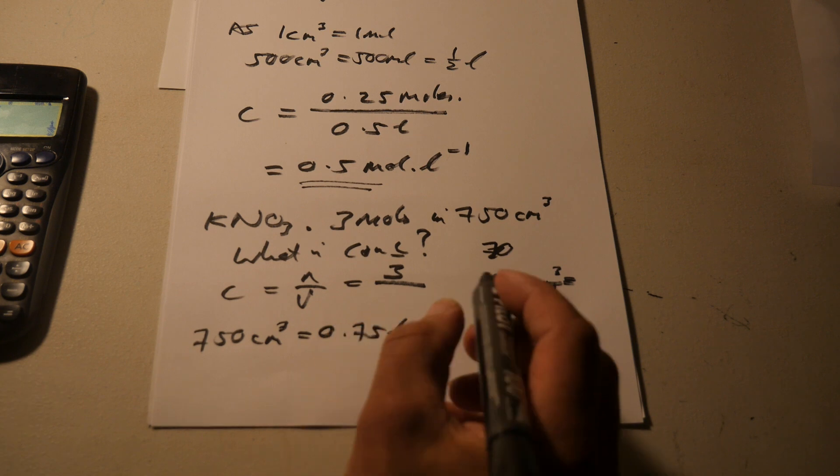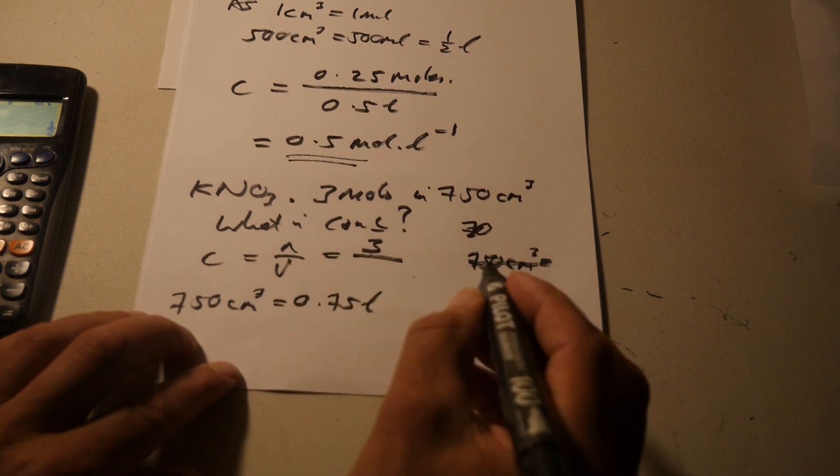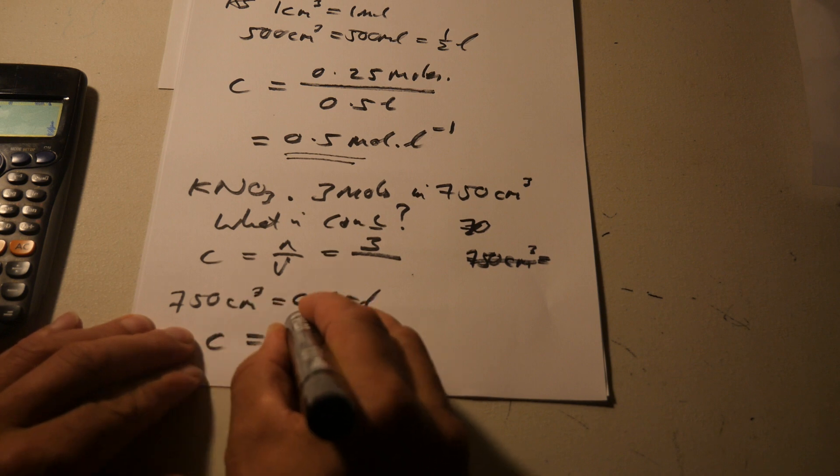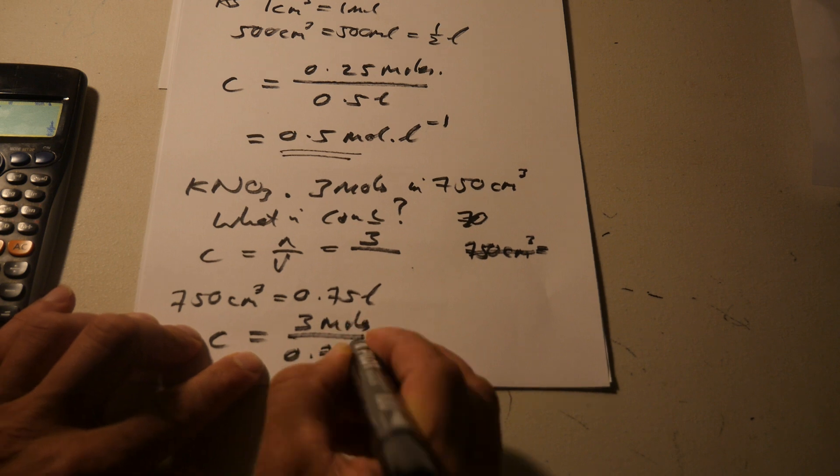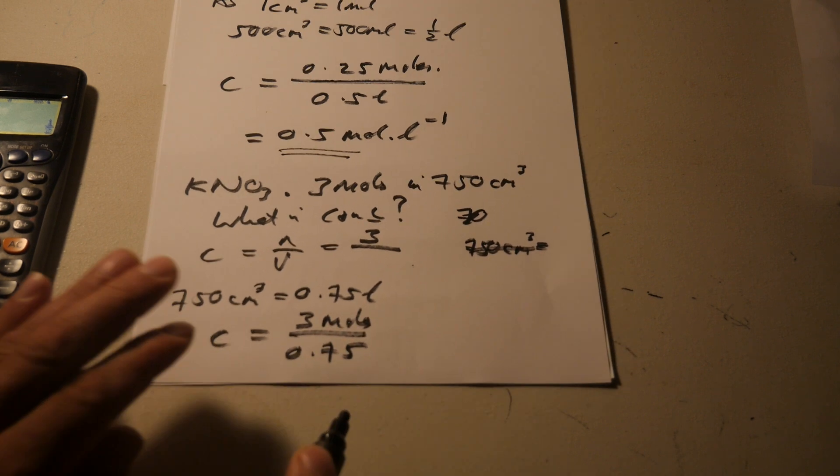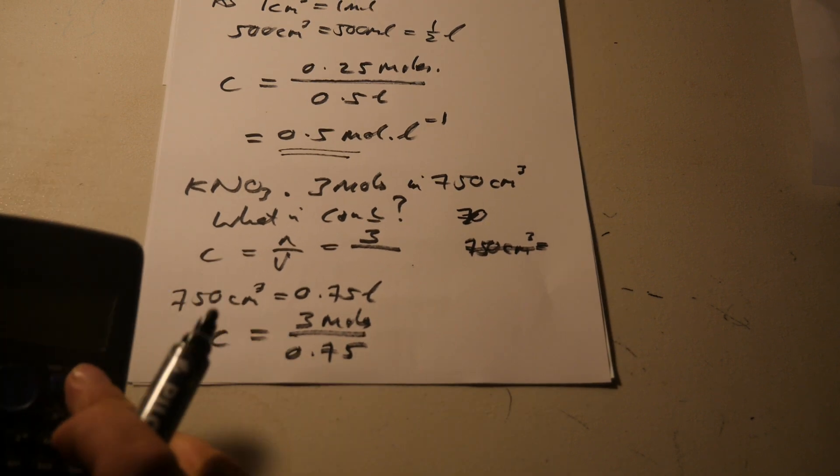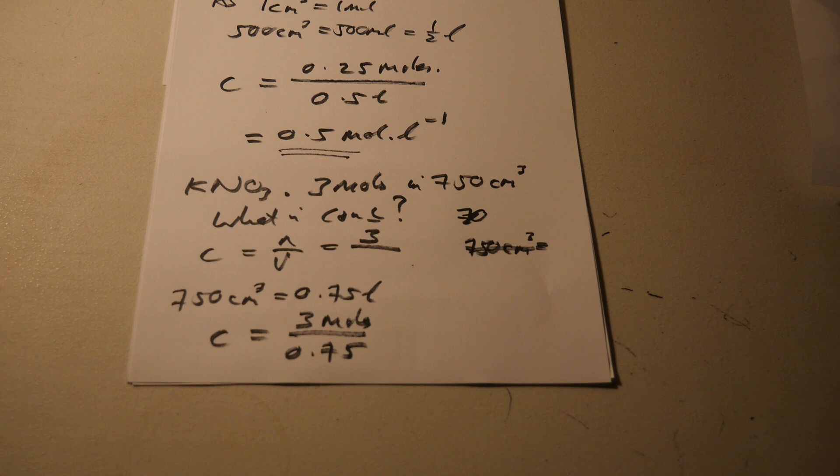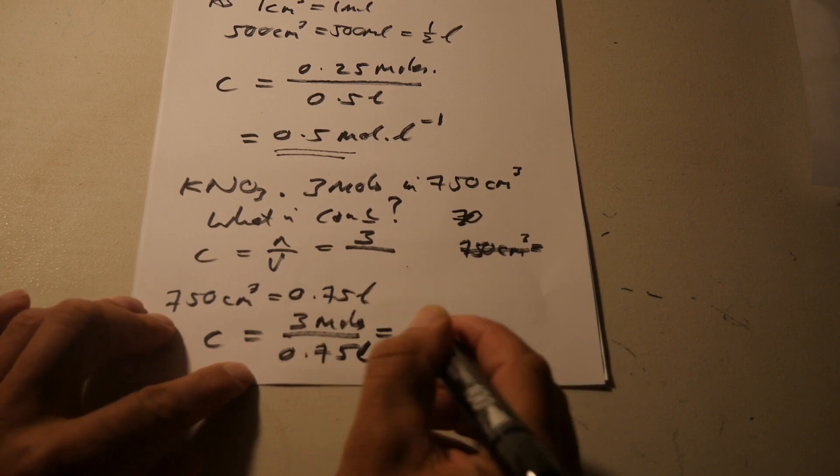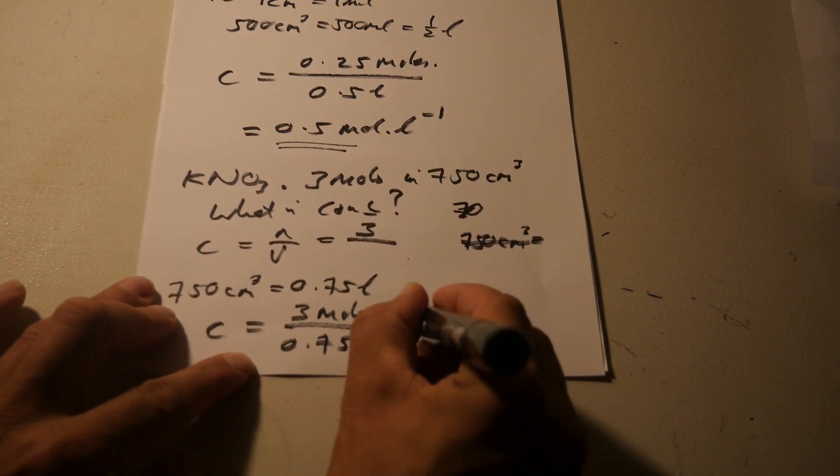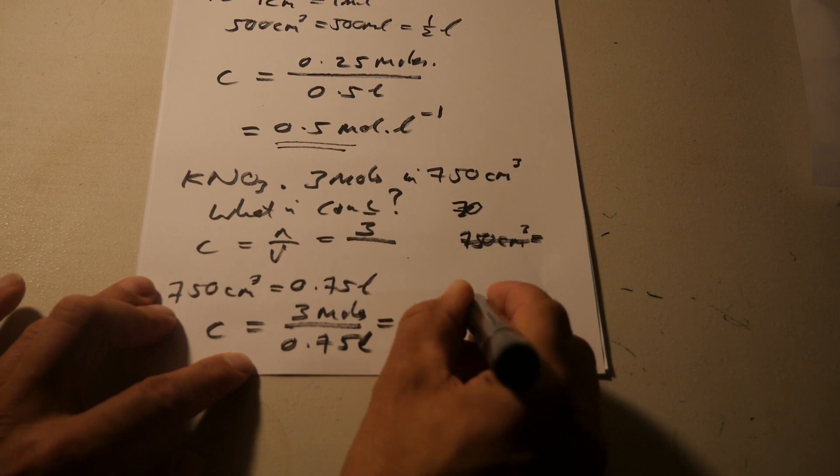So, so the concentration equals 3 moles divided by 0.75. That's a little tricky to calculate in my head. 3 divided by 0.75 equals, um, 4.